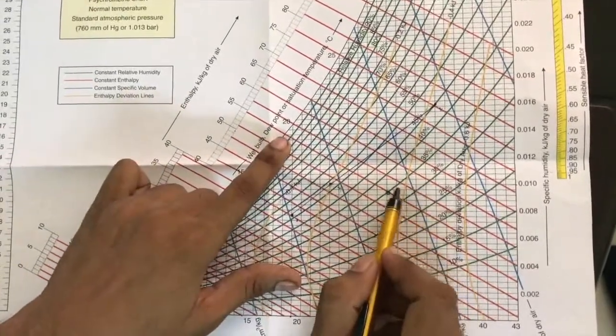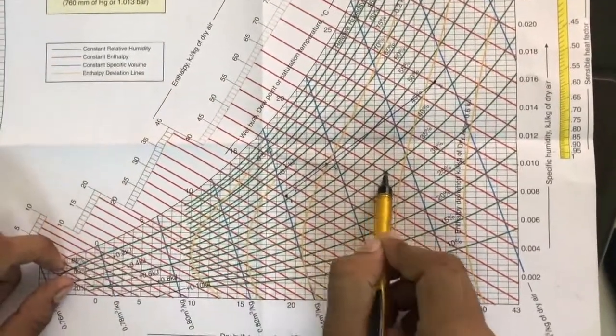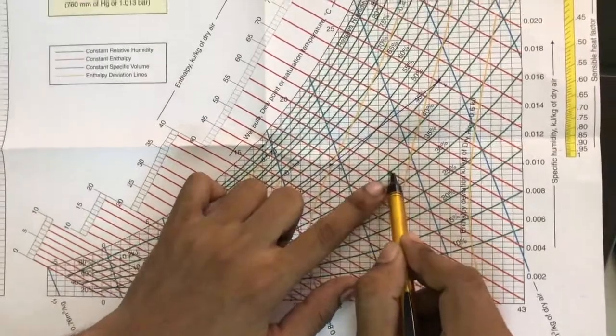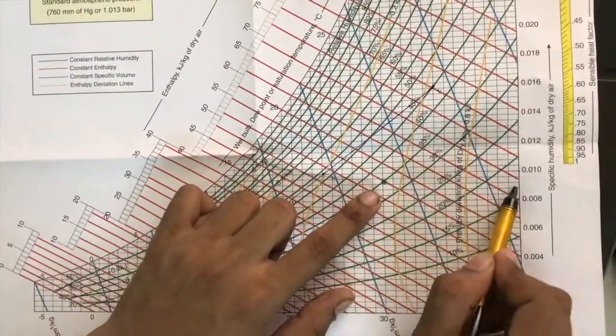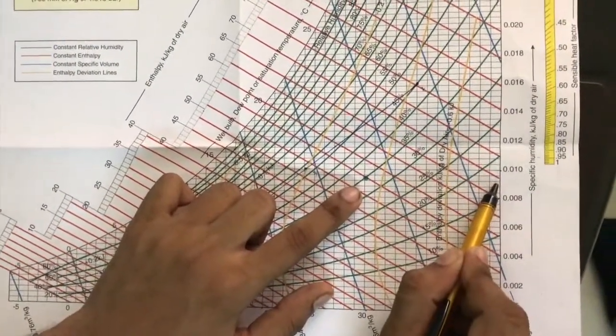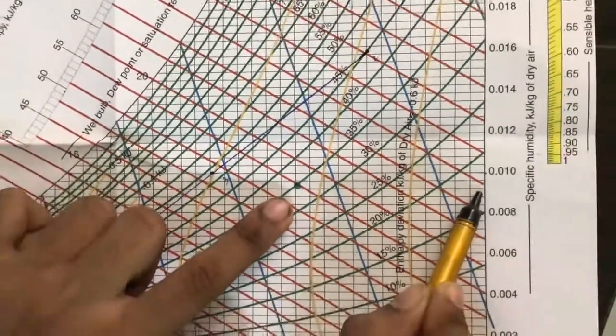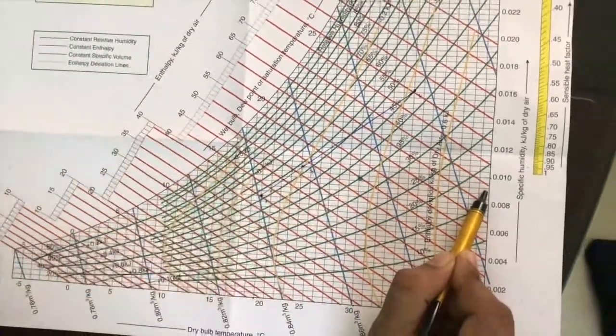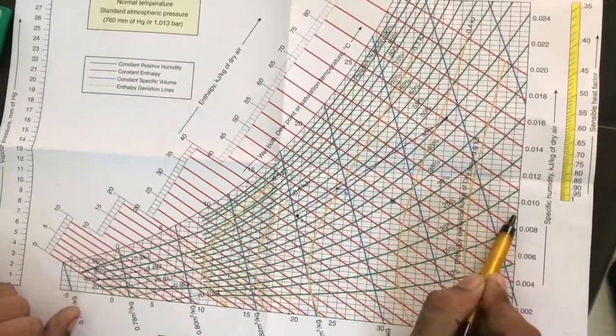Now if we are to find the specific humidity, draw a horizontal line which cuts here. Here look, it's about 0.009, so we have obtained the specific humidity.